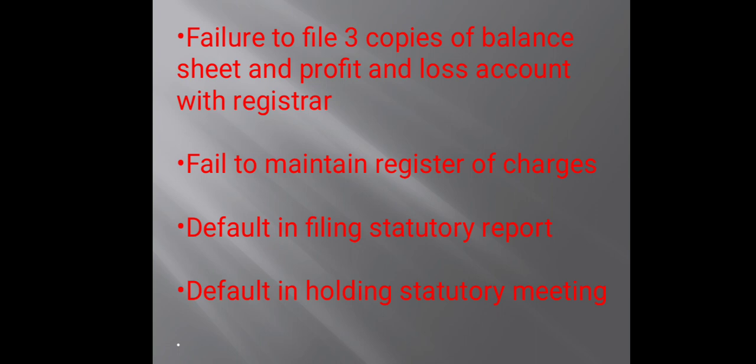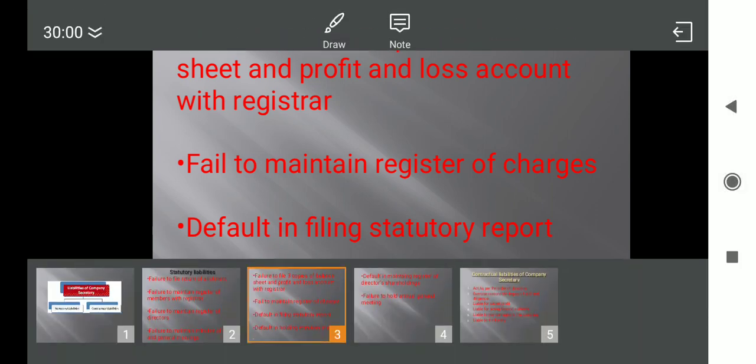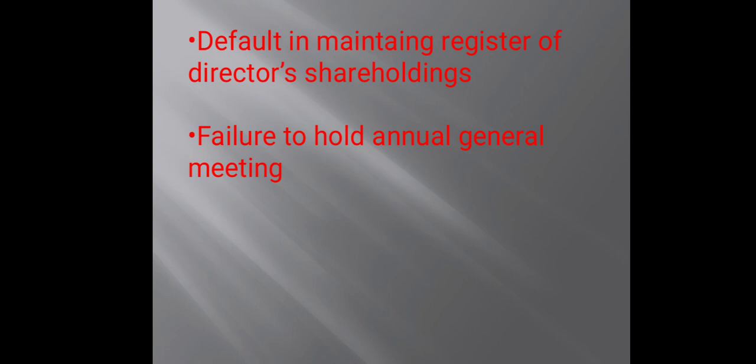The next is default in maintaining register of directors' shareholdings. There is a term called qualification share — if you want to be a director of the company, you must purchase some shares called qualification shares. Whatever shareholdings the directors are holding, you have to maintain that register. Otherwise, the fine will be up to rupees 50,000.